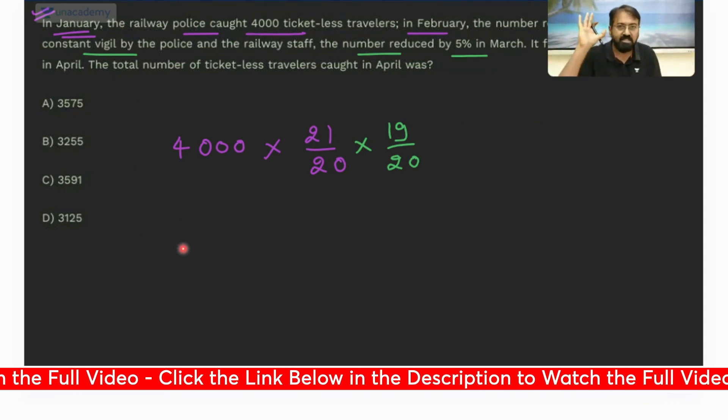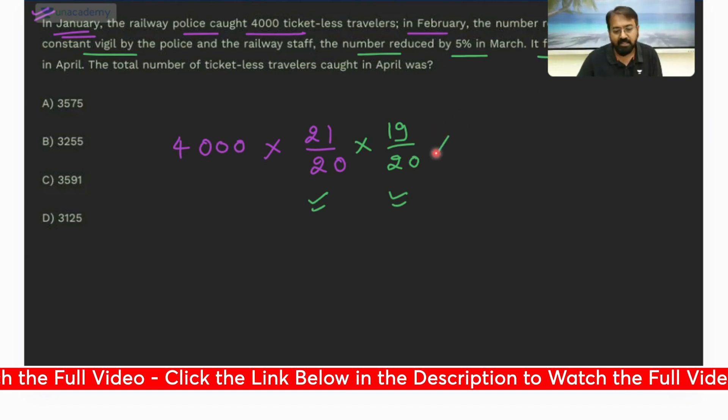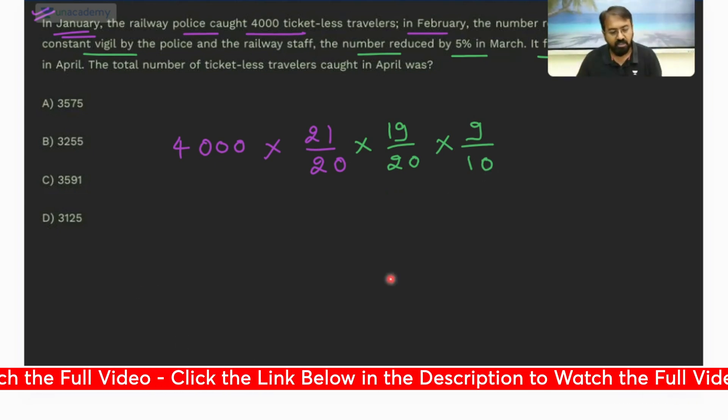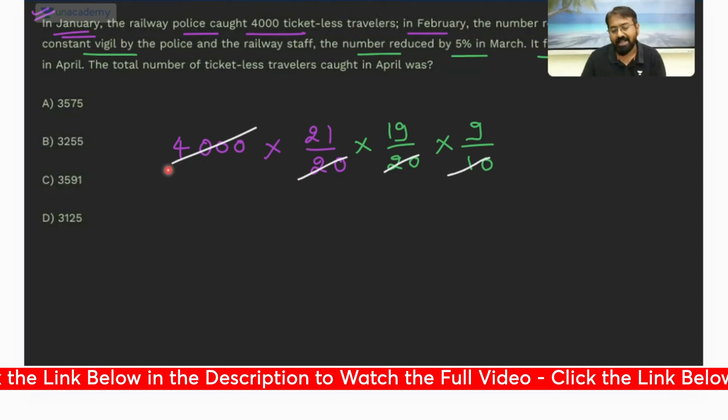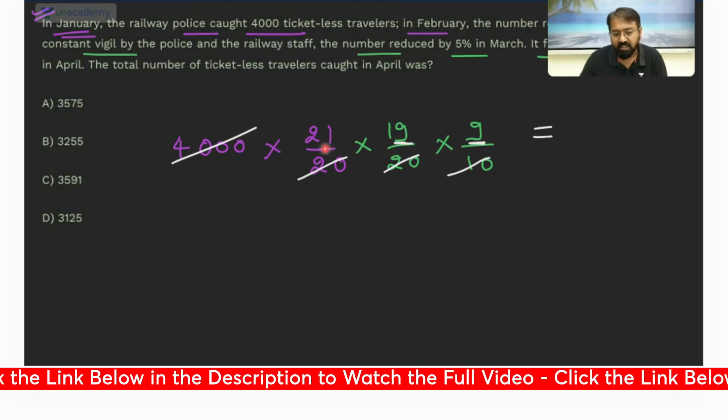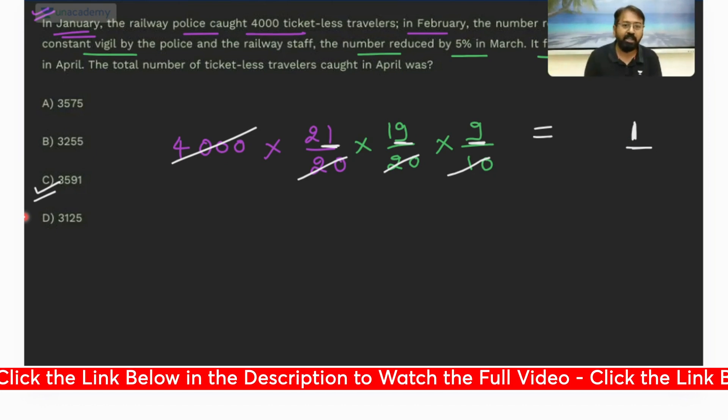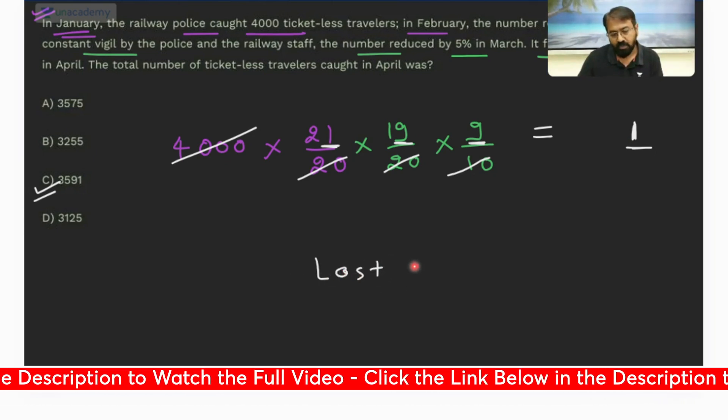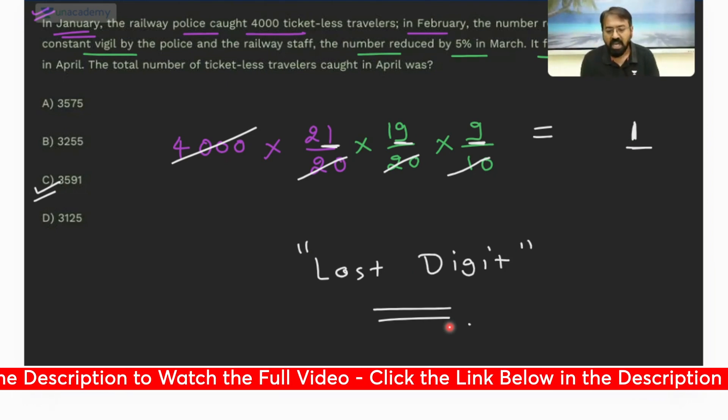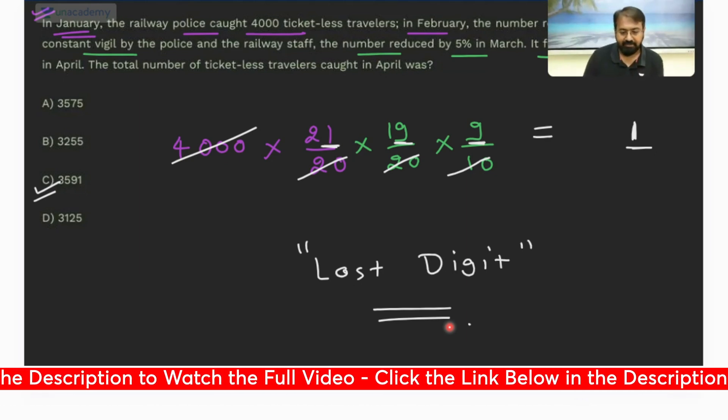Are you all clear up till now? Have you all understood these fractions? Because these are very important. And then it further reduced by 10%, so reduction of 10% means the multiplying factor is 9 by 10. If you observe here, 4000 will get cancelled off, so we need to find out the product of the numerator. What is the last digit? 9 into 9, 81, that is 1 into 1. So the last digit of the product should be 1, and there is only one option ending with 1. You really don't need to make the full calculation, so you can go by last digit. Is there any voice break in the audio?